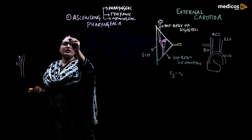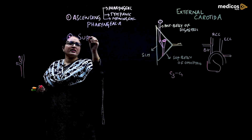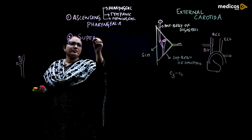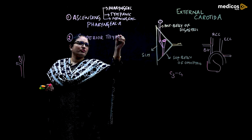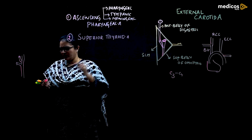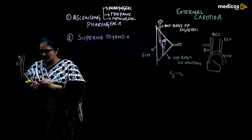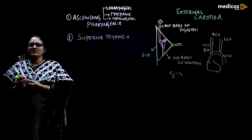The next important branch is the superior thyroid artery. Let us see how the superior thyroid artery is arranged.